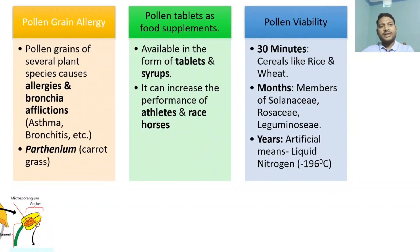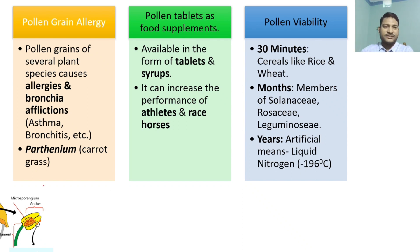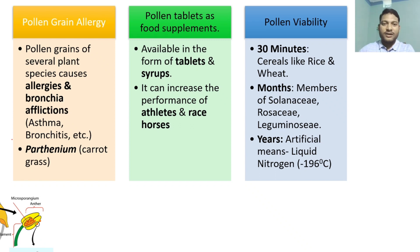There are a few more concepts related to this. One is pollen allergy. Pollen grains can sometimes cause allergy — for example, the pollen grains of Parthenium, commonly known as carrot grass, which came into India as a weed when importing wheat. It is very dangerous and commonly found, and is also known to cause allergic reactions. Some pollens can also cause bronchial afflictions, which in severe conditions might lead to asthma and bronchitis. Pollen is also used as a food supplement or nutrient supplement because it can increase the performance of athletes and racehorses, and is available in the form of tablets and syrups in the market.